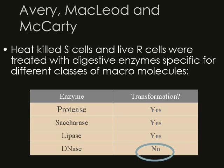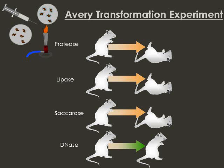The first enzyme he used was protease, which breaks apart proteins — and in this case, the mouse died. With saccharinase, which takes apart carbohydrates, the mouse died again. With lipase, which takes apart fats and lipids, the mouse also died. However, with DNase, which cuts apart DNA, the mouse lived. So: minus protein — mouse dies; minus fats and lipids — mouse dies; minus carbohydrates — mouse dies; but minus DNA — the mouse lives, and the transformation would not go through.